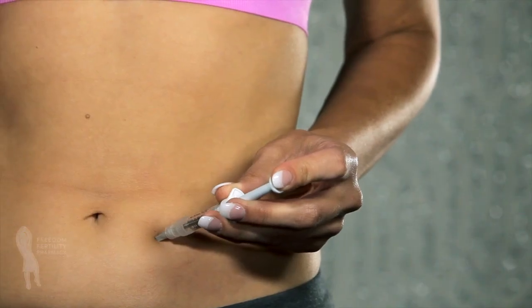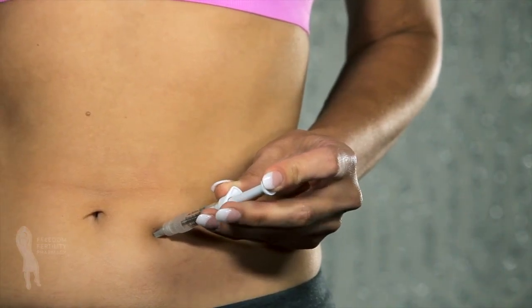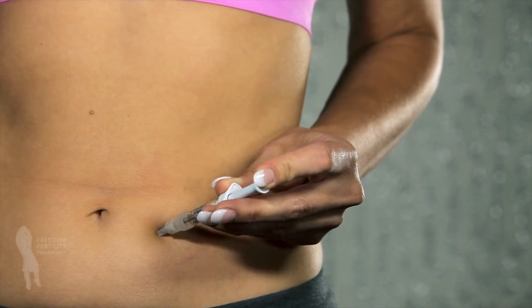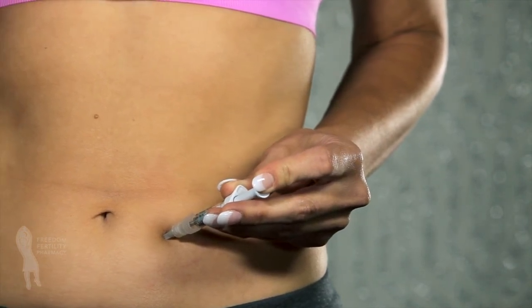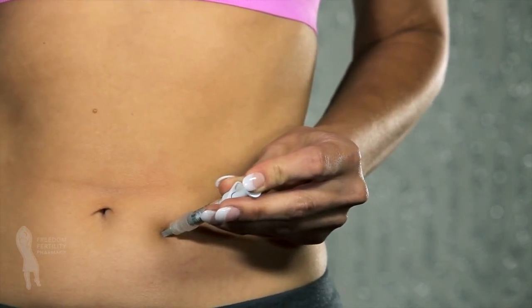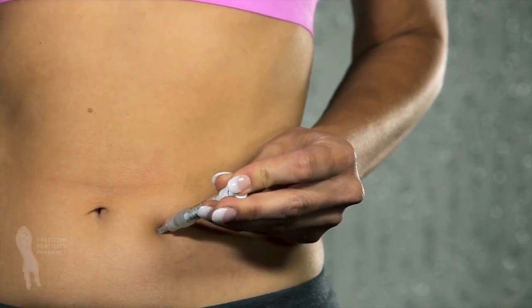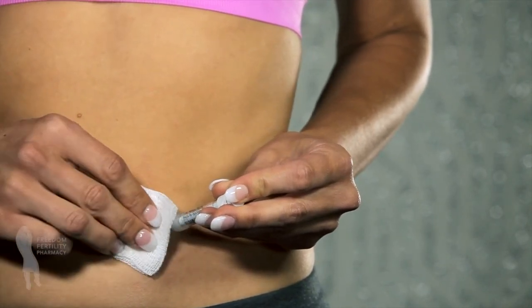Once the needle is inserted, release the pinched skin and push the plunger in a slow, steady motion until all the medication is injected. Gently withdraw the needle and apply pressure to the injection site with a sterile gauze pad.